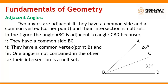Today our topic is adjacent angles. Two angles are adjacent if they have a common side and a common vertex, and their intersection is a null set. In the figure, angle ABC is adjacent to angle CBD, because there are two angles — angle ABC and angle CBD.